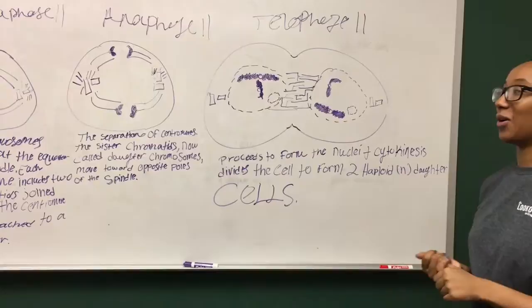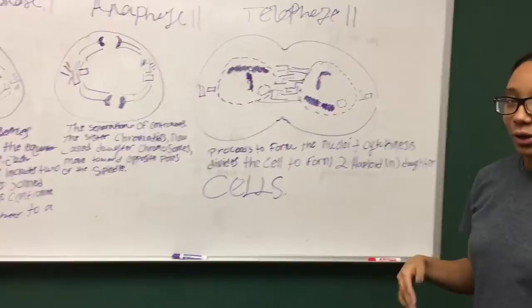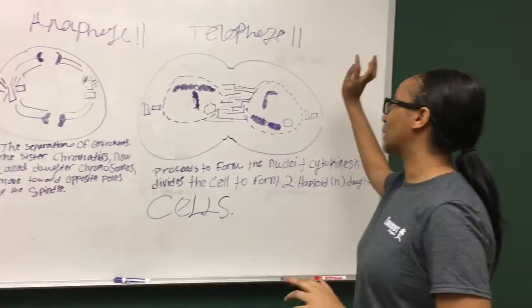Then in anaphase II, the separation of centromeres. The sister chromatids, now called daughter chromosomes, move towards opposite poles of the spindle. They start arguing. They're like, I don't want to be near you anymore. We're going to split.